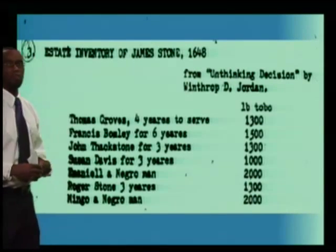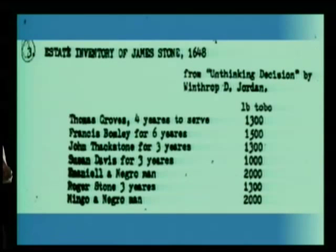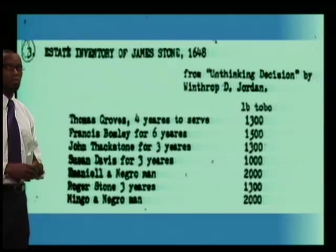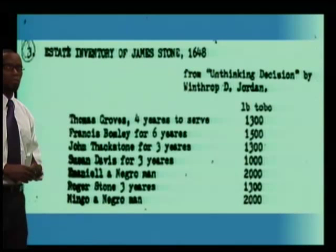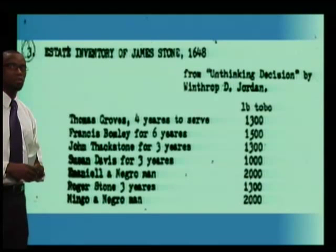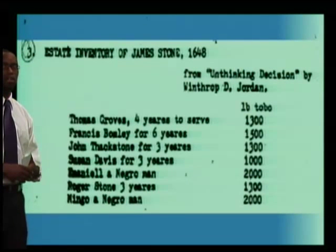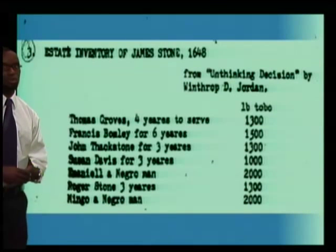Here is the document. It is an estate inventory of James Stone in 1648. Take a few moments to look at this document. What is included in the list, and why do you think it's there? What is an estate inventory?